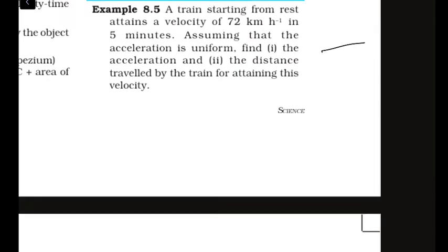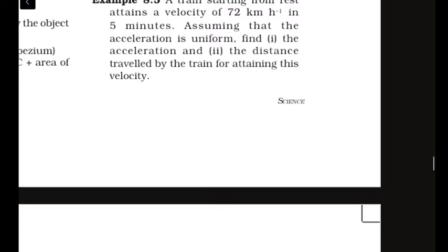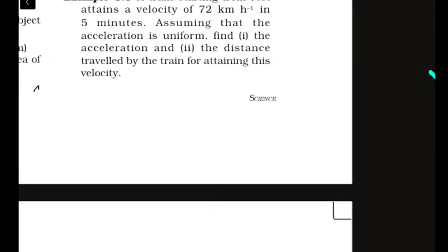A train starting from rest attains a velocity of 72 km/h in 5 minutes. Assume the acceleration is uniform. Find the acceleration and the distance traveled by the train in attaining this velocity. Given data: the train starts from rest, so initial velocity U = 0. Final velocity V = 72 km/h.